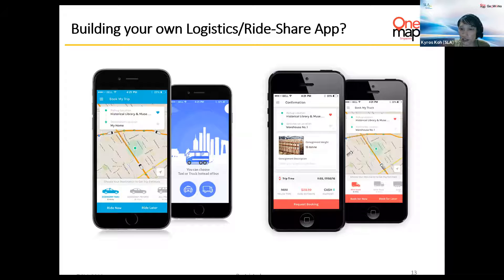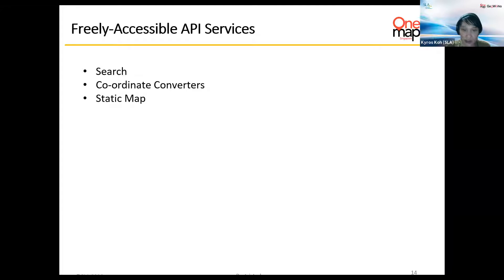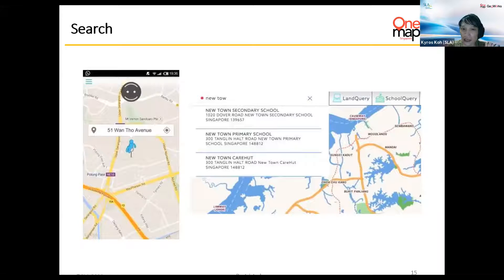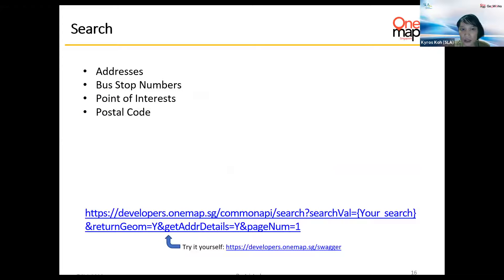Let me move to the Swagger demo. Clicking on Swagger brings you to the API testing page. Let's try the search — click 'Try it out'. I can input 'Revenue House' and execute. You can see the results: IRAS main building, DBS ATM, and so on. You need to allow users to select the correct result since there may be more than one POI. For example, searching 'Amok PO' gives lots of results — over 1,000. You need to pre-define your search value and use the returned lat/long to place markers on the map.